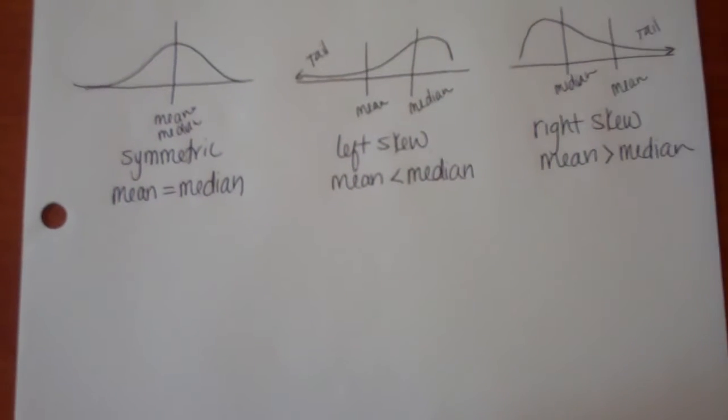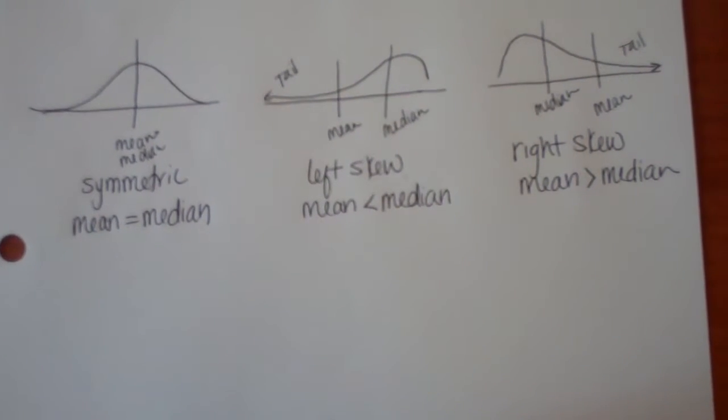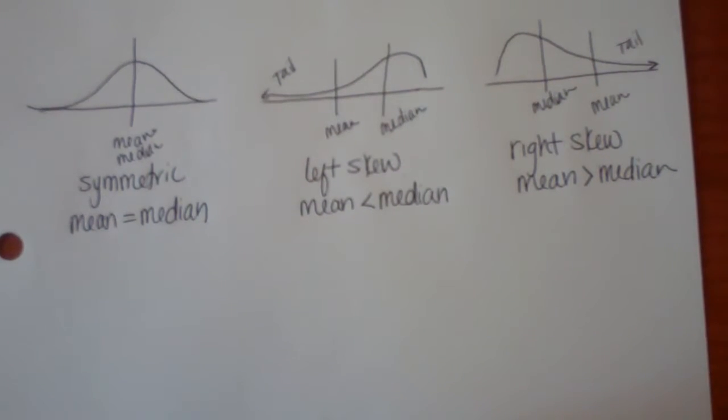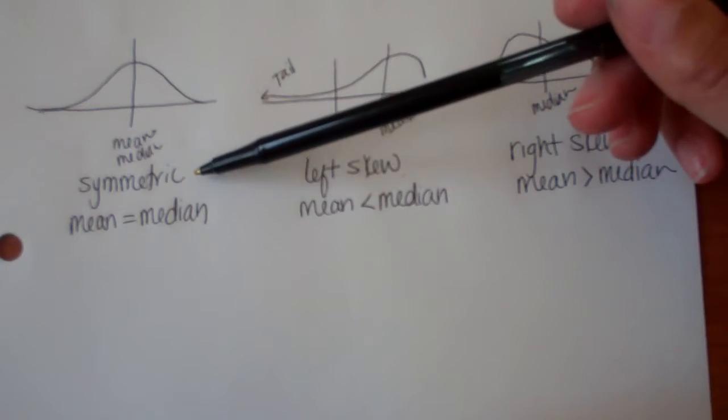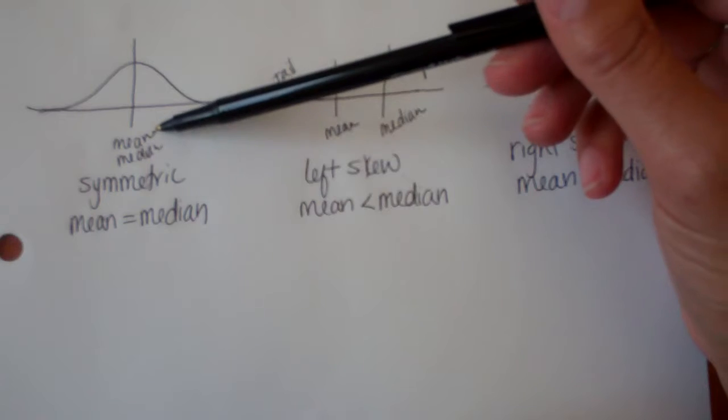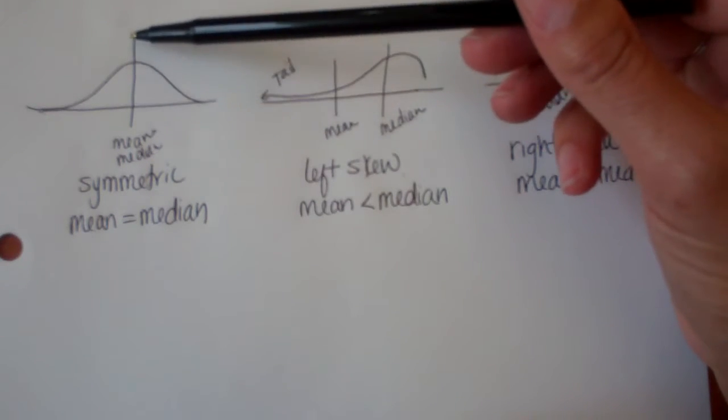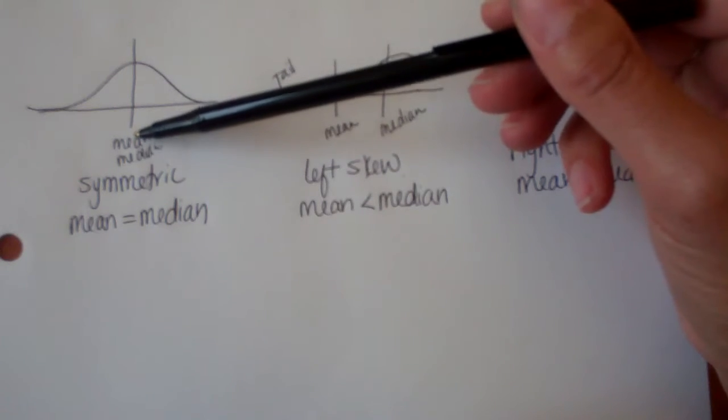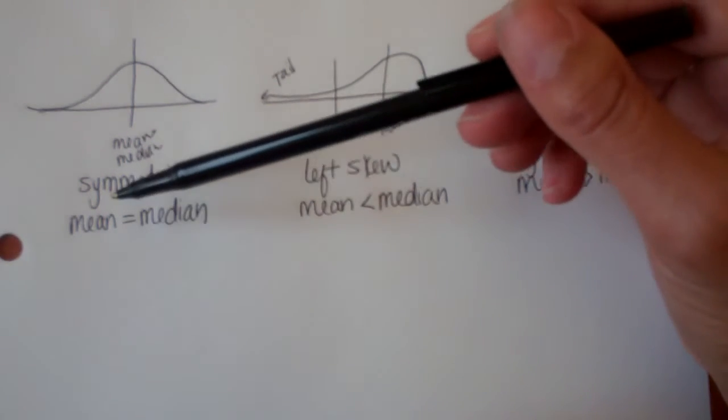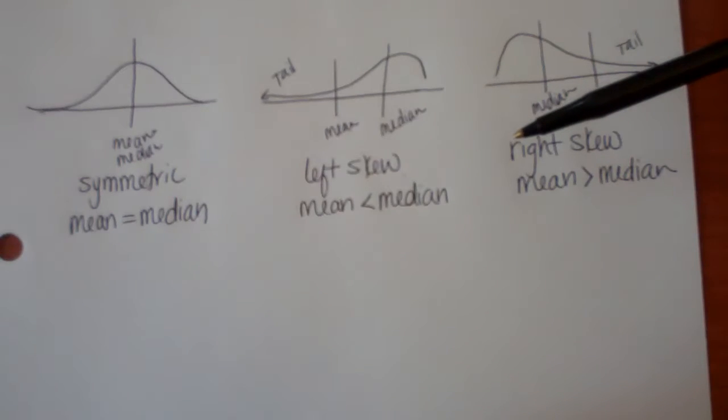So you want to describe their shape. And if we look below here, we're going to see that we've been working with three different types of shapes. The first one is symmetric, or that mound shape. And when we have a symmetric shape, the mean and median are at this balance point. They're right in the center at that same point, which means that the mean and the median are equal.